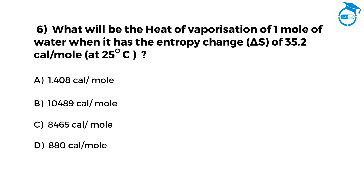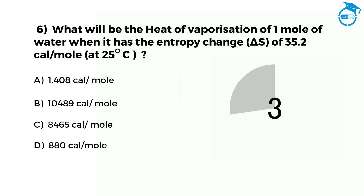What would be the heat of vaporization of one mole of water when it has the entropy change of 35.2 cal per mole at 25°C? Option A: 1,408 calories per mole. Option B: 10,489 calories per mole. Option C: 8,465 calories per mole. Option D: 880 calories per mole. The right option is B, that is 10,489 calories per mole. Few more questions left.